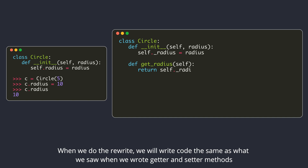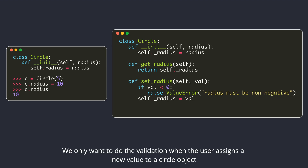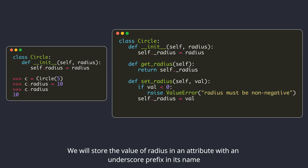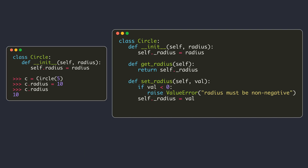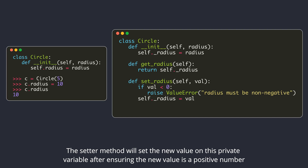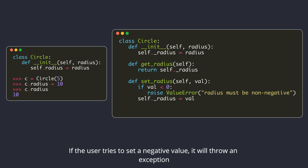When we do the rewrite, we will write code the same as what we saw when we wrote getter and setter methods. For simplicity, assume that we don't want to have the validation when we create the object — we only want to do the validation when the user assigns a new value to a circle object. We will store the value of radius in an attribute with an underscore prefix. The getter method will return the value stored in this private variable. The setter method will set the new value on this private variable after ensuring the new value is a positive number. If the user tries to set a negative value, it will throw an exception.